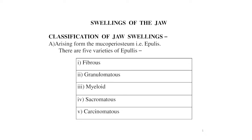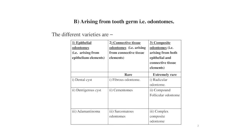The swellings of the jaw are classified into the following categories. First is arising from the mucoperiosteum — that is the epilis — with five varieties: fibrous, granulomatous, myeloid, sarcomatous, and carcinomatous. Second is arising from the tooth germ, that is odontomes, with epithelial odontomes arising from epithelial elements: dental cyst, dentigerous cyst, and adamantinoma.